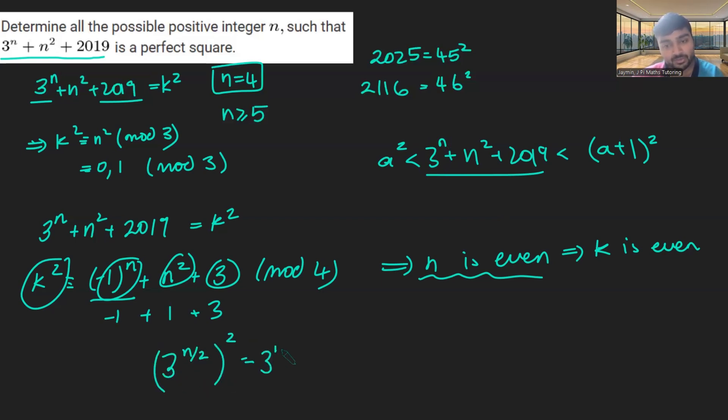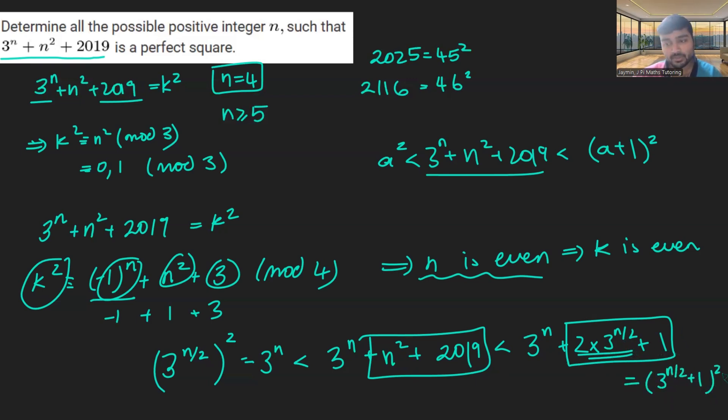So 3 to the n over 2 squared is, of course, just 3 to the n, which is definitely less than 3 to the n plus n squared plus 2019. And this turns out to be less than 3 to the n plus 2 times 3 to the n over 2 plus 1, whenever n is at least 14. In other words, I'm just saying that this thing here is less than this thing here. And it should be obvious that this is true for sufficiently large n, because this is an exponential, but this is only a quadratic. And exponentials eventually grow larger than quadratics. And you can just prove this by induction that this is true whenever n is bigger than 14. And then we have this thing here, 3 to the n plus 2 times 3 to the n over 2 plus 1. That just equals 3 to the n over 2 plus 1 squared.